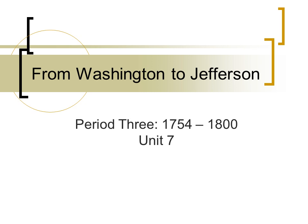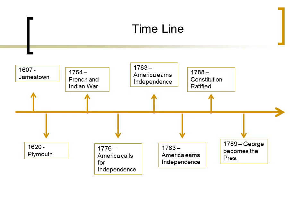We are still in period 3, but now we are at unit 7, 1754 to 1800, and we're going to look at the country from George Washington through Thomas Jefferson. I find it astounding that we went through so many changes and became an actual real country in such a short amount of time. This timeline might help you see that — Jamestown 1607, Plymouth 1620, and by 1789 we have George as our first president and we are truly, for the first time, a nation independent.